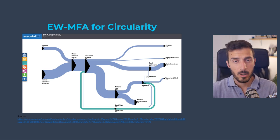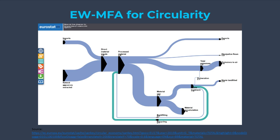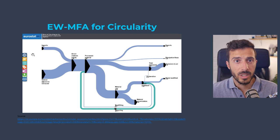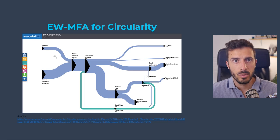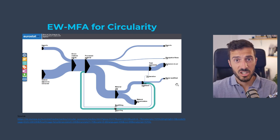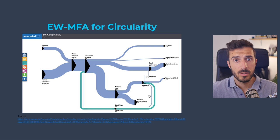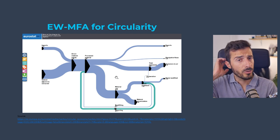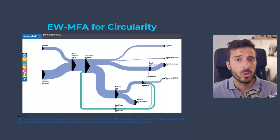Finally, economy-wide MFA is increasingly relevant for measuring circularity. The EU has started measuring how circular different member-state economies are, and it builds directly on economy-wide MFA — using domestic extraction, imports as DMI, domestic processed outputs, and exports, adding how waste is treated to assess circularity. In a future video I'll show you how circular most European countries are and compare them.